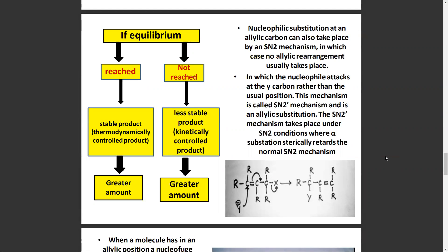If equilibrium is reached, nucleophilic substitution at an allylic carbon can also take place by the SN2 mechanism, in which case no allylic rearrangement usually takes place. In this case, the nucleophile attacks at the gamma carbon rather than the usual position. This mechanism is called the SN2 prime mechanism and involves allylic substitution. The SN2 prime mechanism takes place under SN2 conditions where alpha substitution sterically retards the normal SN2 mechanism.